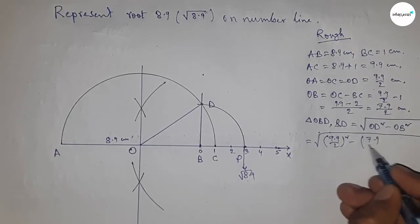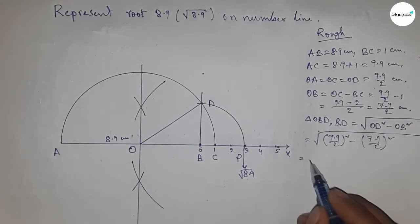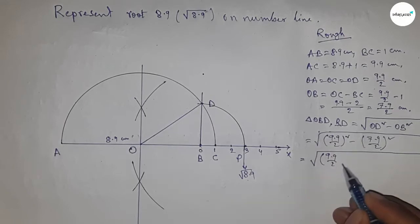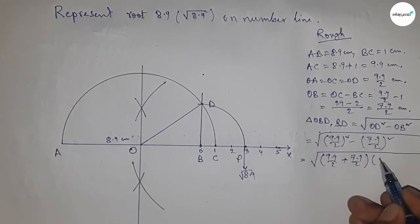Next I'm going to use the formula a squared minus b squared equals (a plus b)(a minus b). So here applying the formula first.